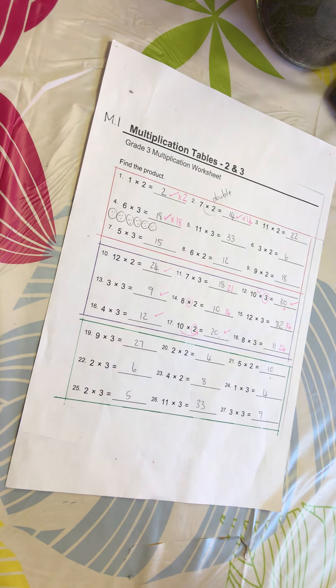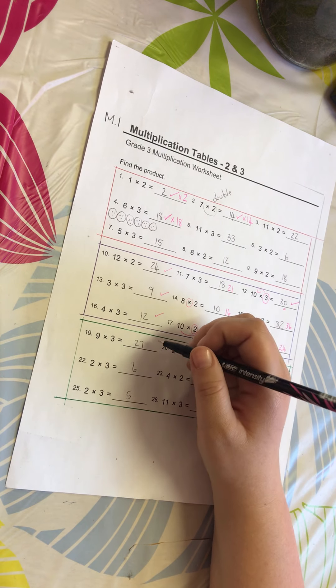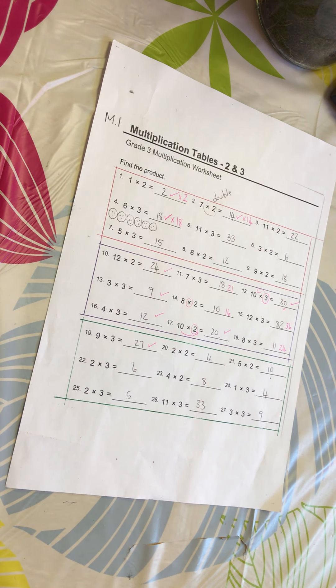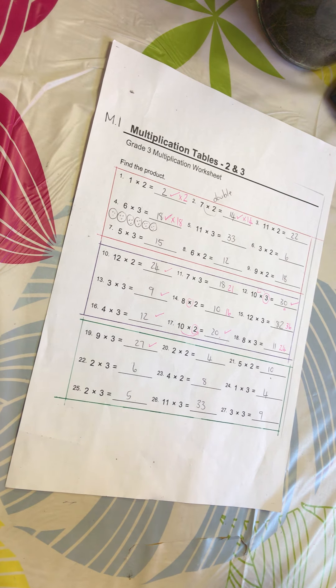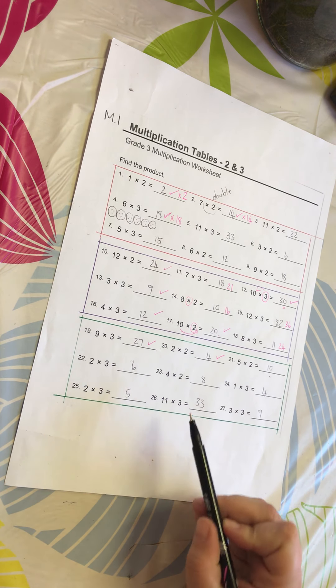Those are things you will just have to go memorize. We are moving on. Number 19: 9 times 3 is 27. To be honest with you, there are a few things that I get confused with as well, but that's for another day. Okay, number 20: 2 times 2 is 4.